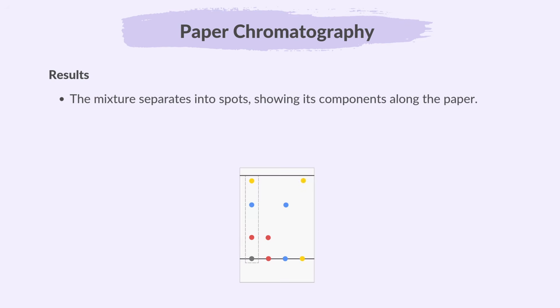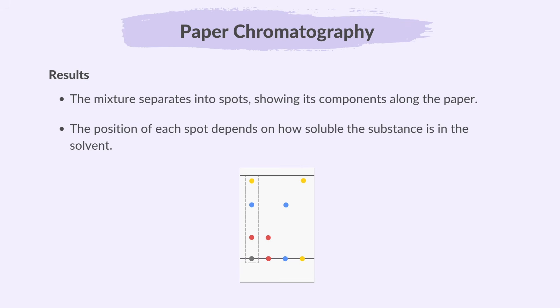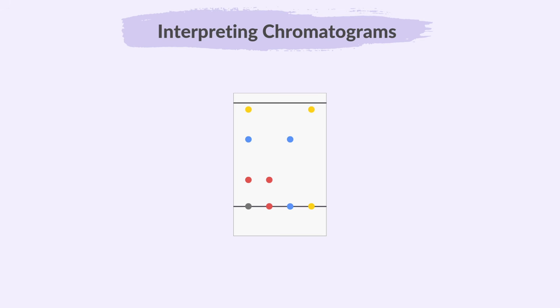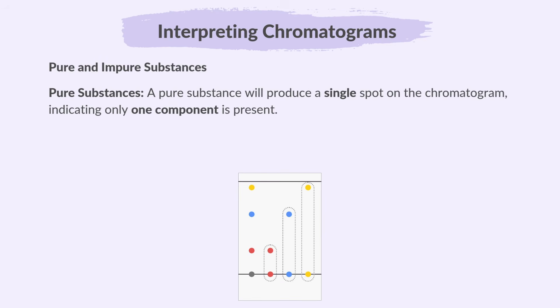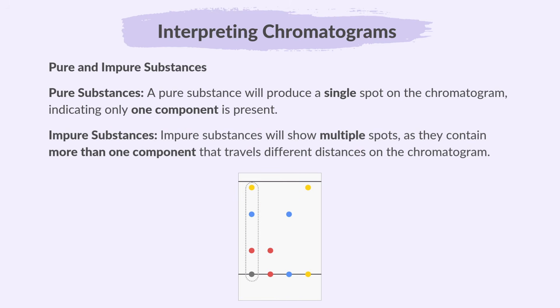The mixture separates into spots, showing its components along the paper. The position of each spot depends on how soluble the substance is in the solvent. Now let's interpret the simple chromatogram — the paper showing the results. A pure substance will produce a single spot on the chromatogram, indicating only one component is present. Impure substances will show multiple spots as they contain more than one component that travels different distances on the chromatogram.